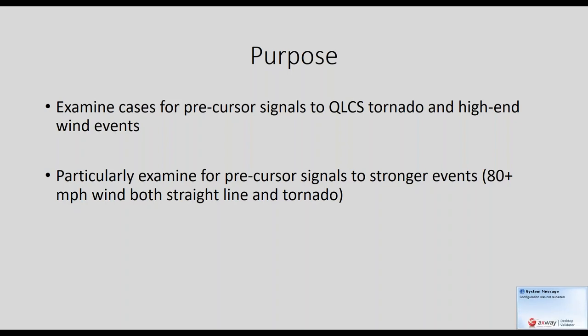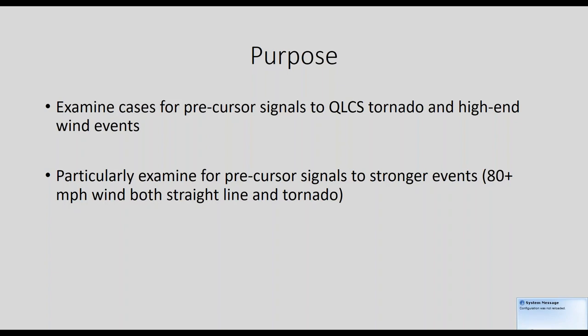How easy it is to not be able to see a tornado at 65, 75, or 80 miles per hour. But it's also equivalently easy in a lot of cases to not see the higher end QLCS tornadoes with much lead time, other than there's a tornado debris signature or there's a strong couplet.